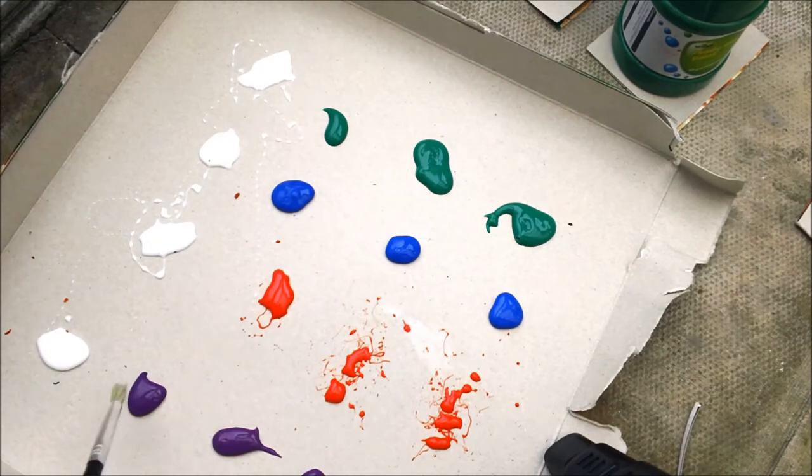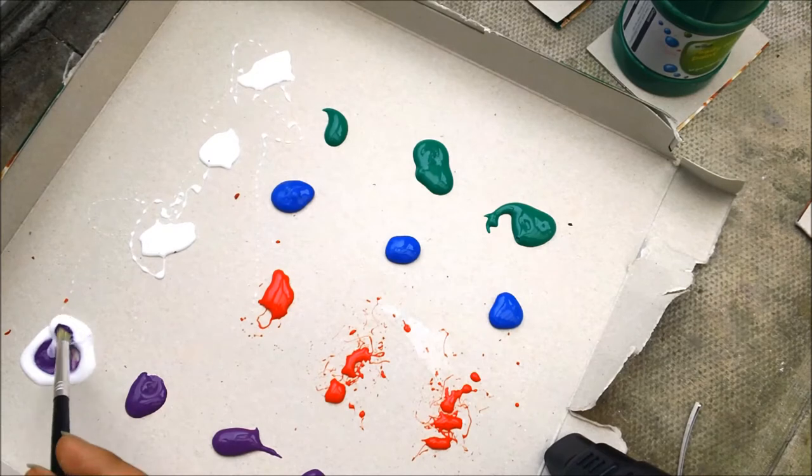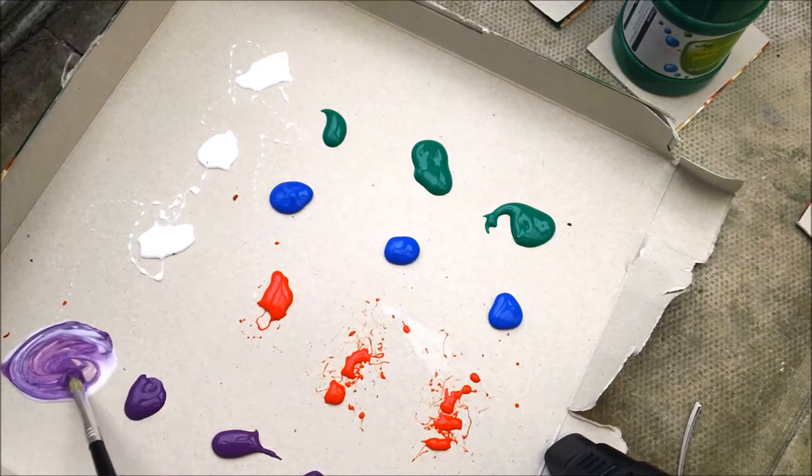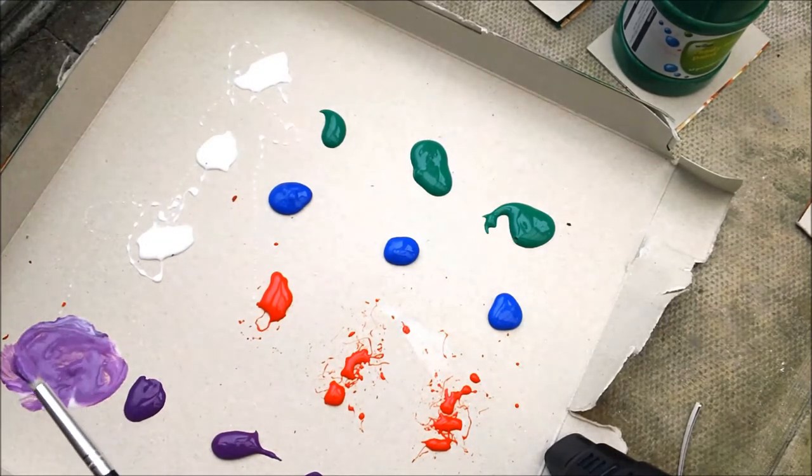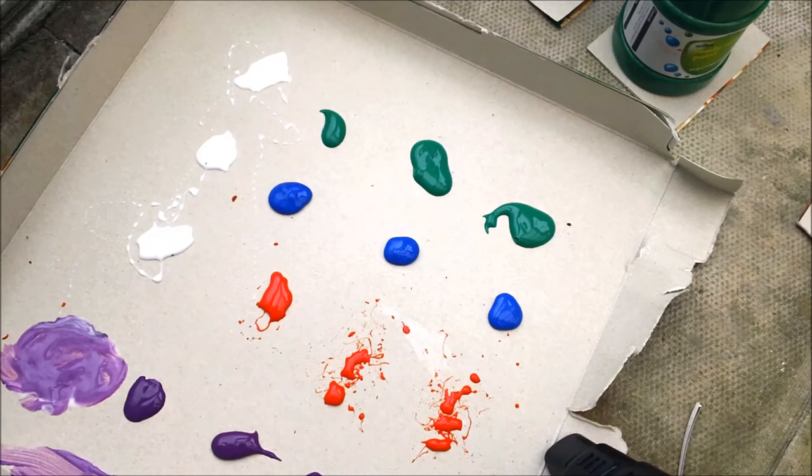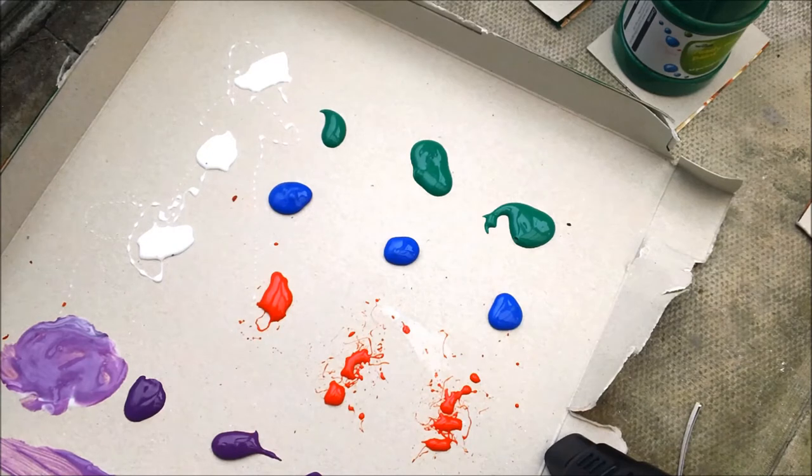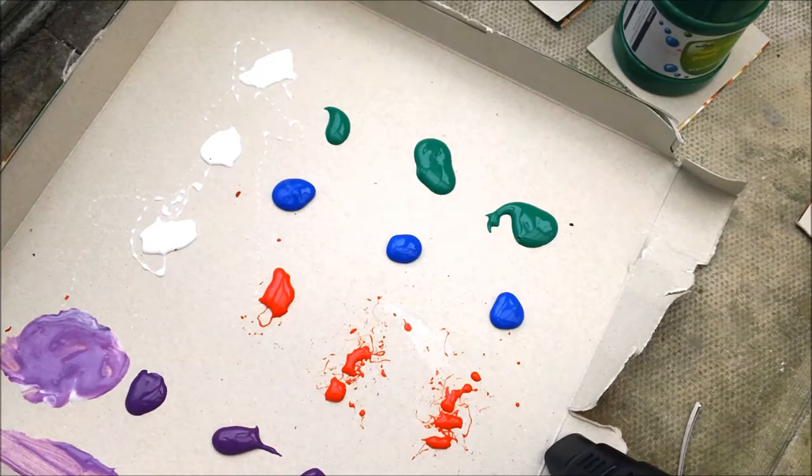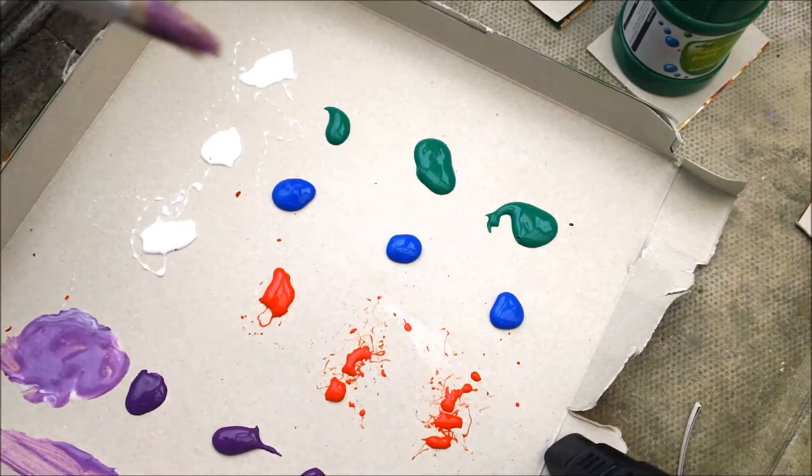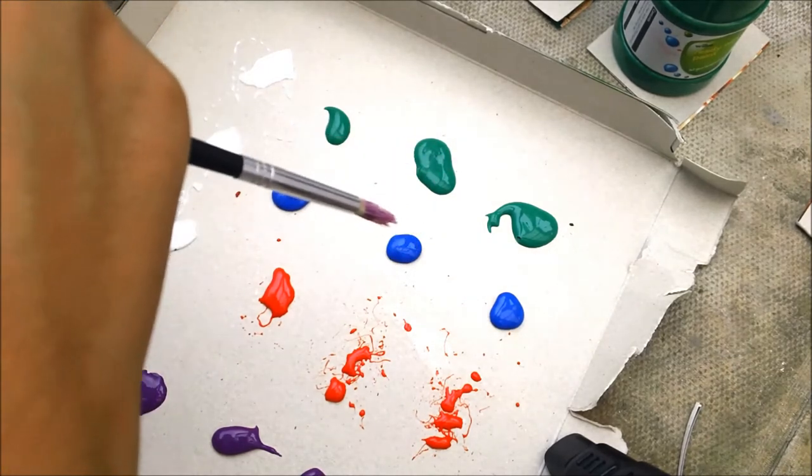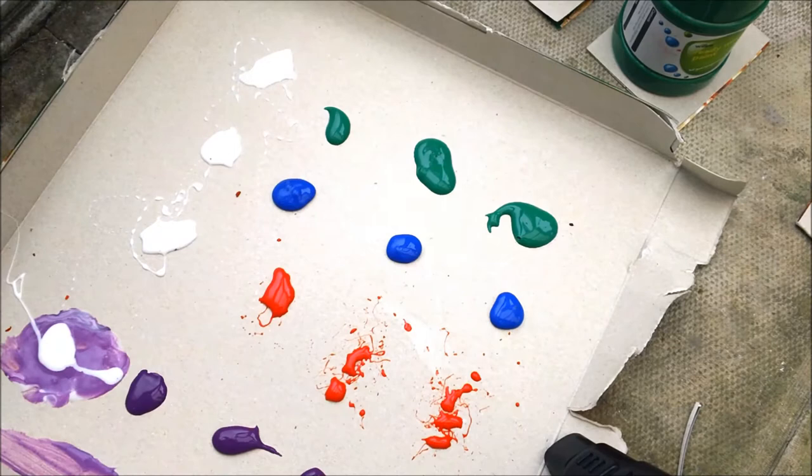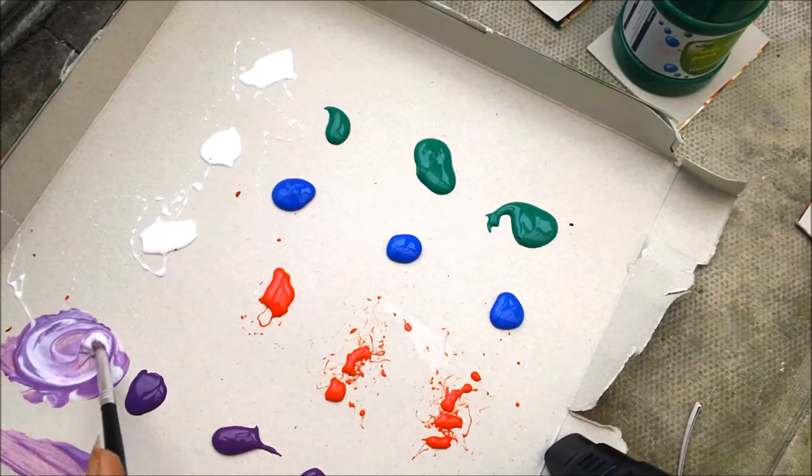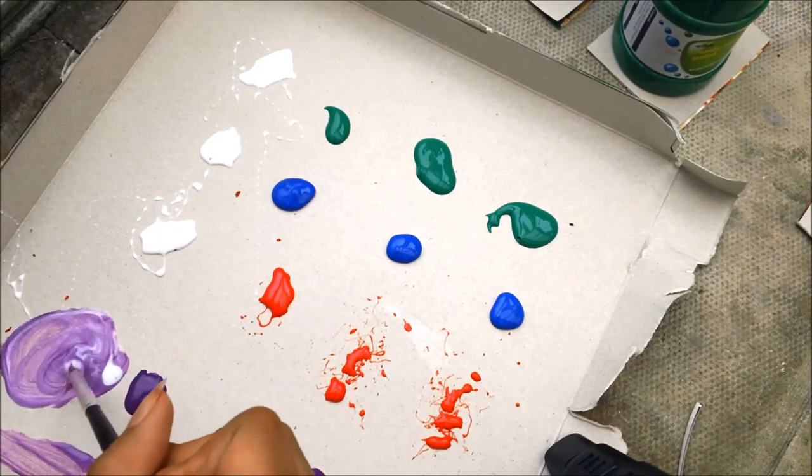So I'm going to show you how to make the lighter colors first. So the lighter colors, you're going to need kind of like a medium sized paintbrush. Starting off with the purple, I'm taking the first paint and mixing it with the PVA. This makes a really nice light color. And that is your first shade. Then you're going to want to add a bit more PVA glue. You're probably thinking, why are you adding more? Because you need this to be a paler version. You'll understand in a minute. So it needs to be more pale than that.